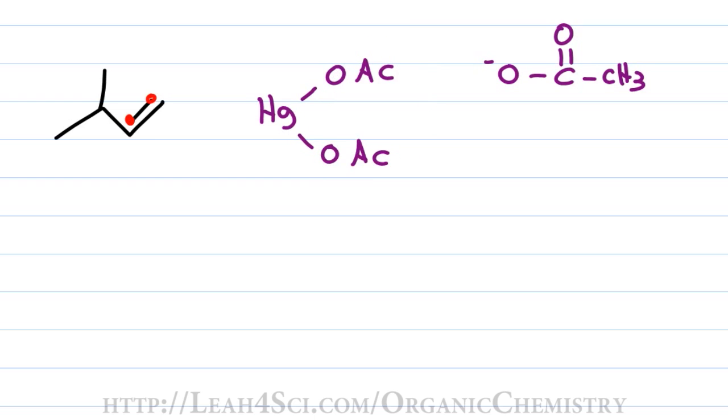To start this reaction, we have the nucleophilic pi electrons reaching out for the electrophile or the mercury atom. Mercury cannot have three bonds and so one of the acetate groups will be kicked out along with its lone pair of electrons to float around as acetate in solution.